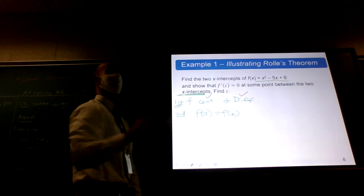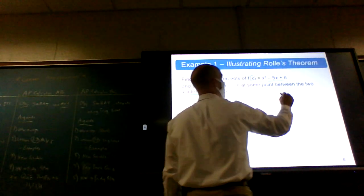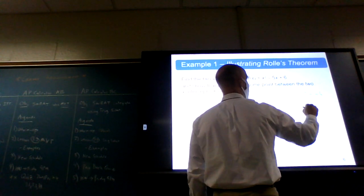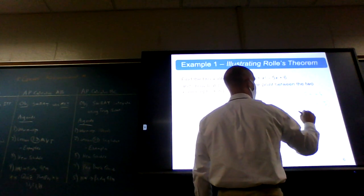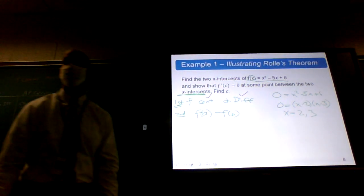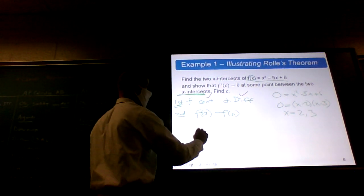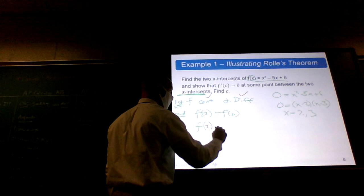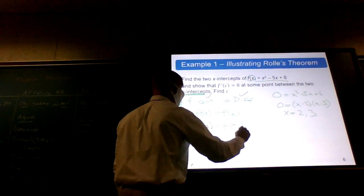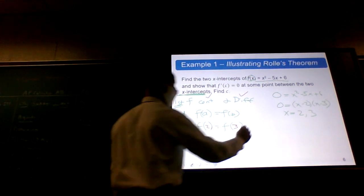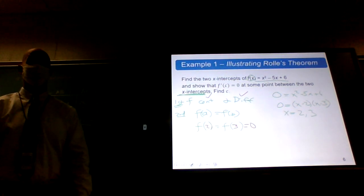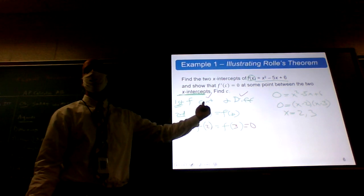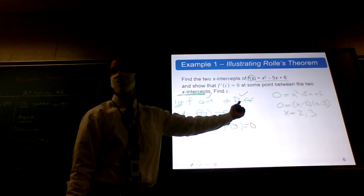That comes from this, the x-intercepts. How do you find the x-intercepts of a curve? Well, to find the x-intercepts, you put y equals zero. So zero equals x squared minus 5x plus 6. So zero is going to be equal to (x minus 2)(x minus 3). So what are our x-intercepts? They're 2 and 3. So would you agree that f of 2 is equal to f of 3 in this example? Because they're both equal to zero.